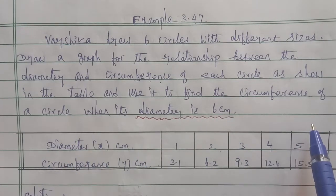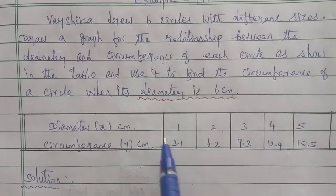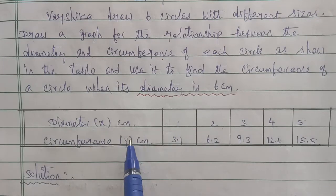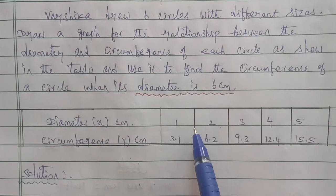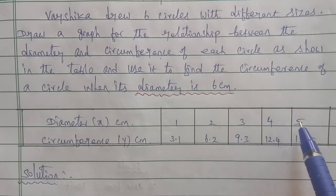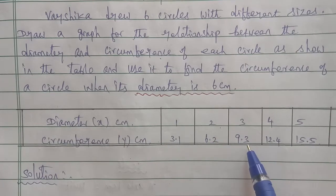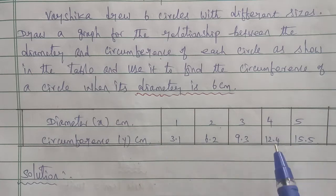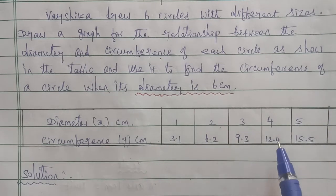If you look at the table, you can see the relationship between the diameter and the circumference of the circle. The diameter values are 1, 2, 3, 4, 5 and the circumference values are 3.1, 6.2, 9.3, and the numbers are increasing. So from the table, as x increases, y also increases — it is a direct variation.